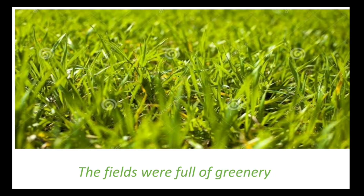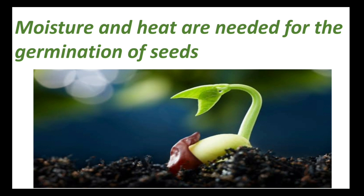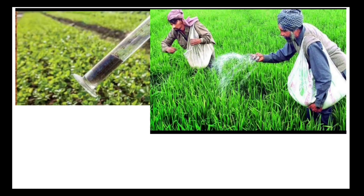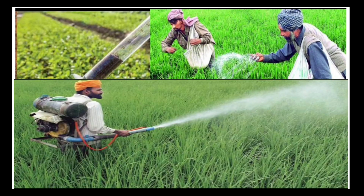Uncle said that moisture and heat are needed for the germination of seeds. After some days, agriculture experts — those were agriculture development officers from the Agriculture Development Department — came to see the crops. They advised that the crops should be watered in time and urea should be applied to save the leaves from getting pale.